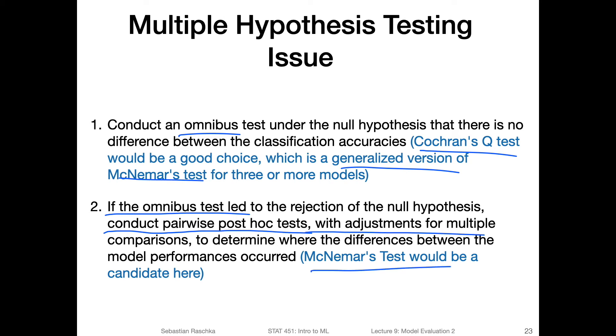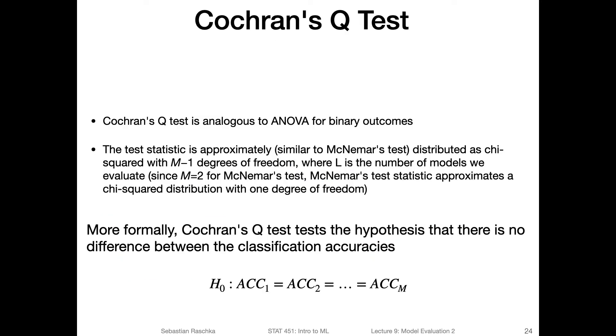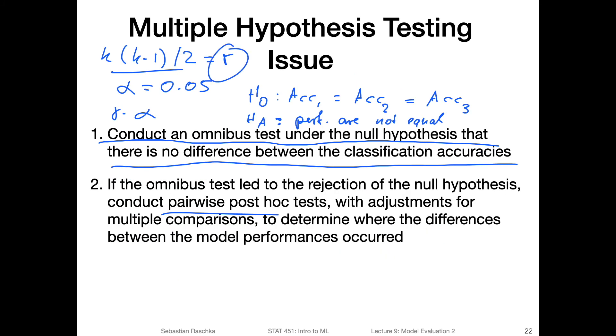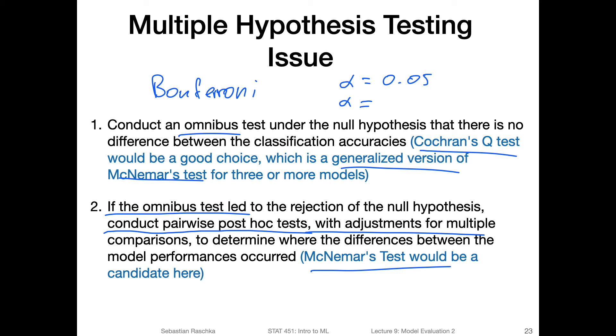So for the pairwise tests, we could, for example, use McNemar's test. And as an adjustment, we could use Bonferroni's method. One obvious candidate that you probably heard about in other statistics classes is Bonferroni's method, which is just dividing the alpha, the significance level, by the number of comparisons. So if my alpha is point oh five, if I have r comparisons, we would use an updated alpha by dividing the original alpha by r, and use this to test all the pairwise tests.